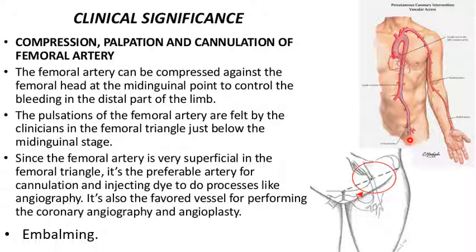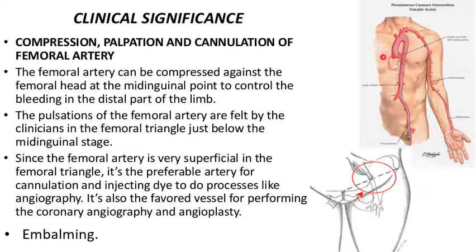The cannula is inserted through the femoral artery and advanced via the external iliac, the common iliac, and then into the abdominal aorta, thoracic aorta, arch of aorta, and then into the heart. From there it can be passed through the coronary arteries for coronary angiography and angioplasty. The femoral artery is also used for embalming purposes.